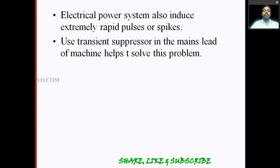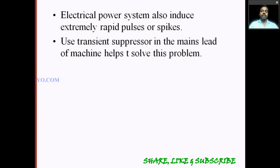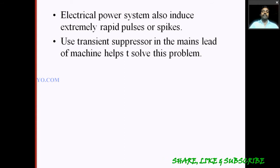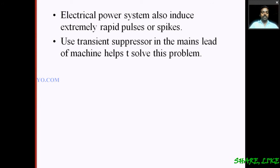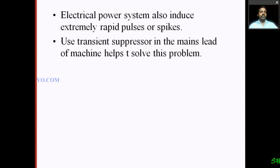The next source is the electrical power system. The electrical power system — including generators and inverters — externally creates rapid pulses and spikes that completely affect the ECG signal. A transient suppressor in the mains lead of the machine helps to solve this problem. Using a transient suppressor instrument helps reduce these rapid pulses and spikes.